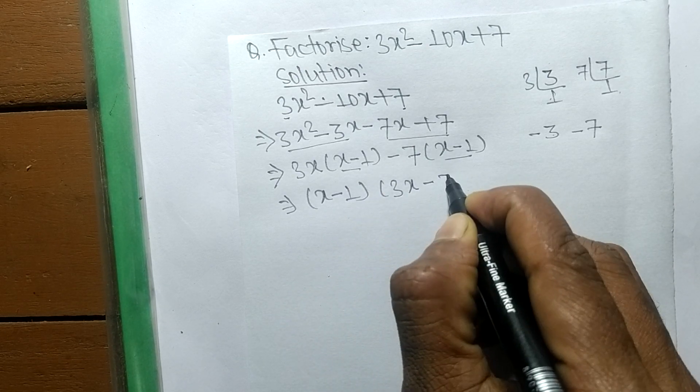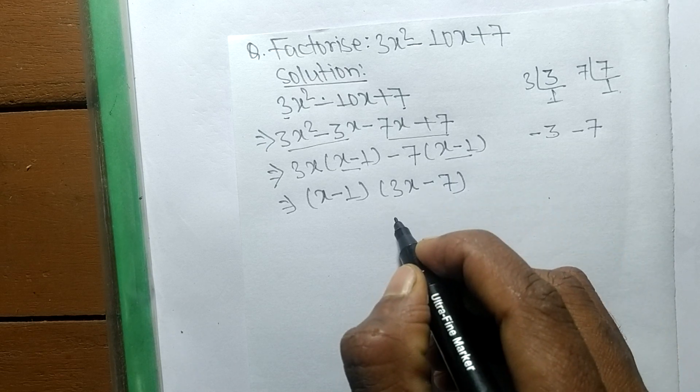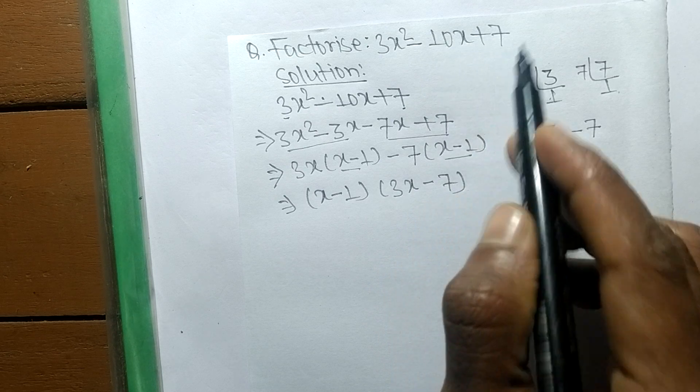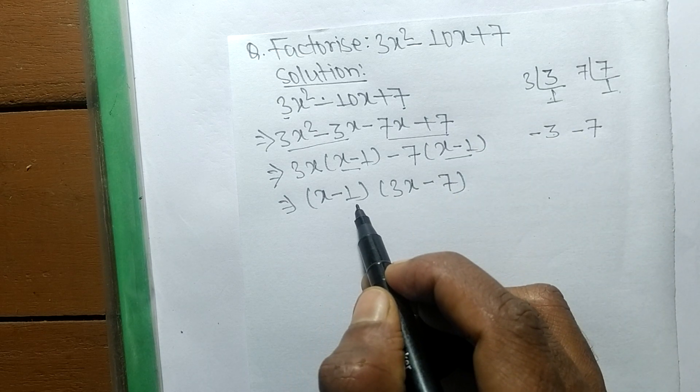in the second one is -7. So the factors of 3x² - 10x + 7 is (x - 1) and (3x - 7).